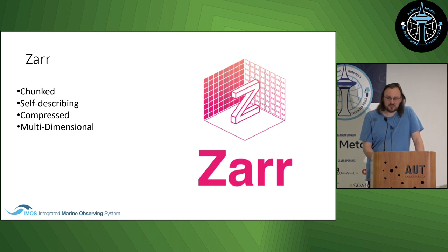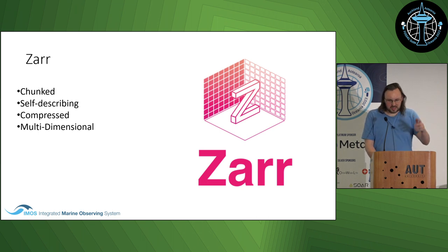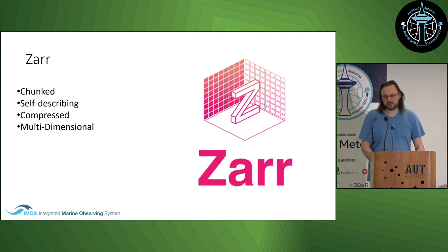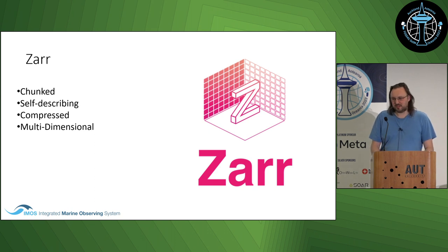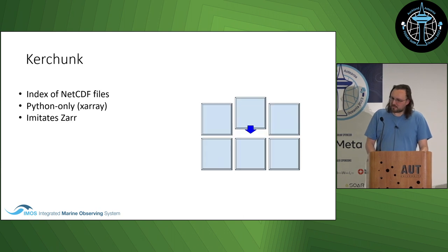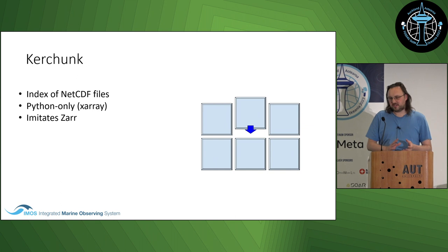Zarr is multi-dimensional — you can have as many dimensions as you want. For instance, that previous dataset has latitude, longitude, and time — three dimensions. You could also add altitude in certain datasets. In addition, since we don't only measure sea surface temperature, a single Zarr file might contain wave height and other parameters — maybe 10 different parameters — all in the same Zarr file.